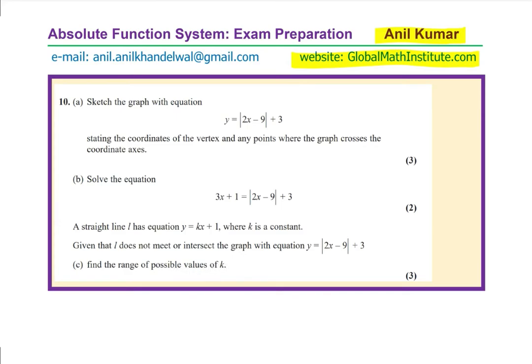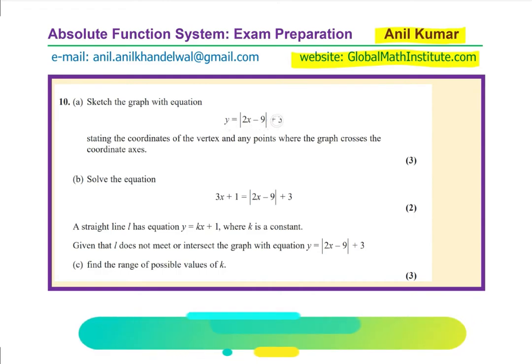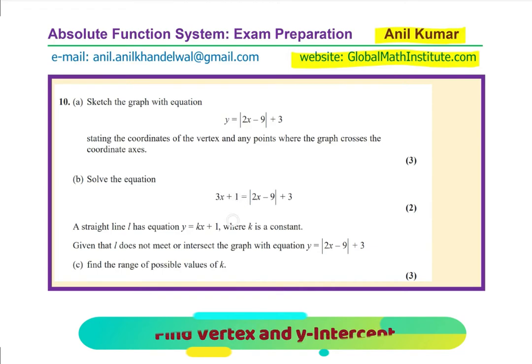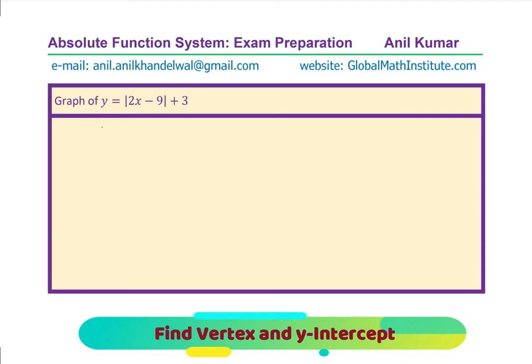This is a very important question. As you find in many exam questions, we work with an equation, try to understand what it represents, relate it with another kind of equation, and then find possible values of k using a system of equations. Let us see how we solve such a question. We are given the equation y equals the absolute value of 2x minus 9 plus 3.